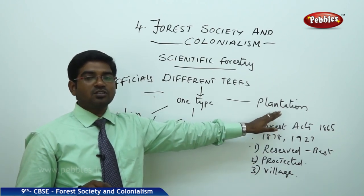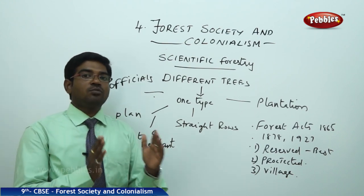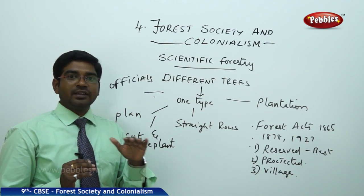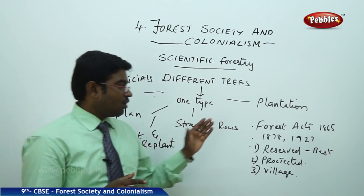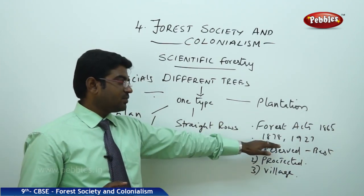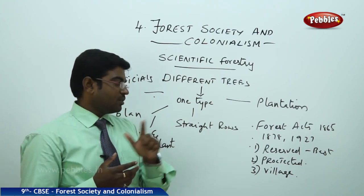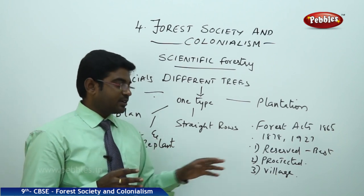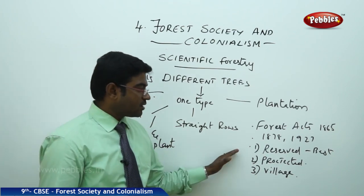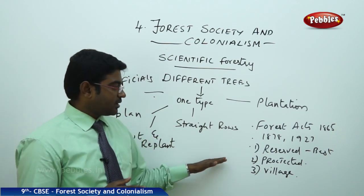The officials used to plan and decide how much forest had to be cut and how much had to be replanted every year. According to their rules, the cutting and replanting happened continuously. He also passed certain forest acts in 1865, which were modified again in 1878 and 1927. According to the 1878 act, he divided the forests into three major categories: first, the reserved forest; second, the protected forest; and third, the village forest.